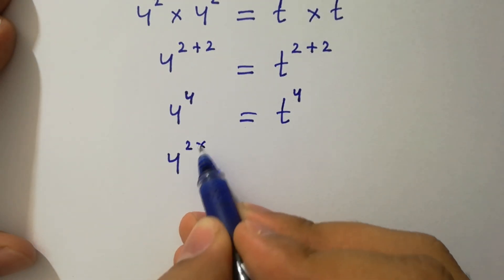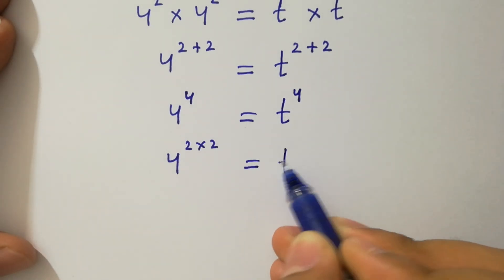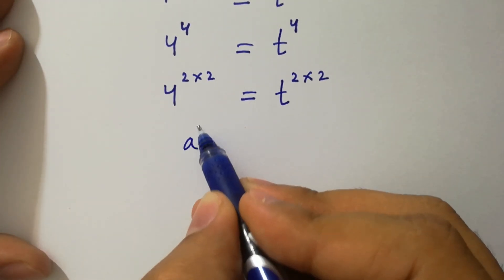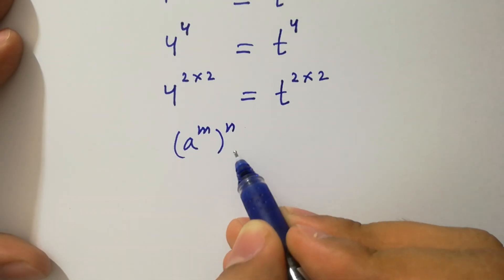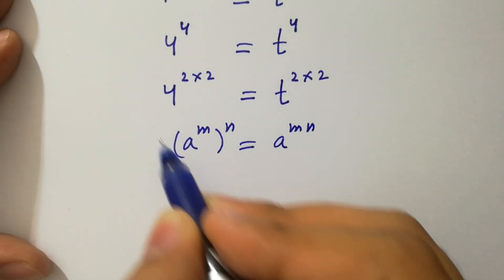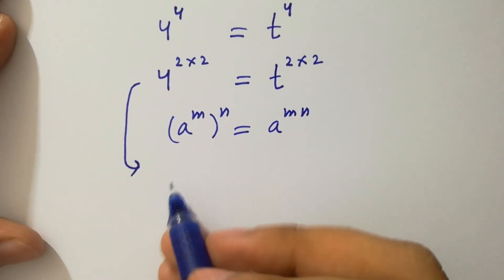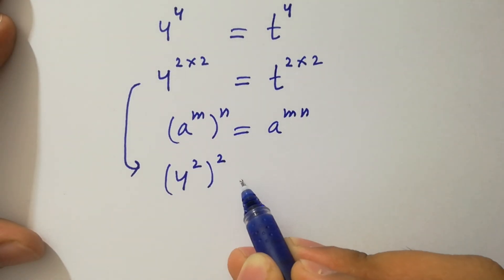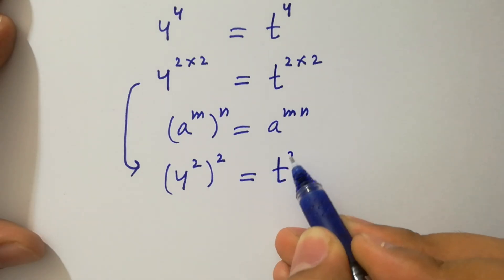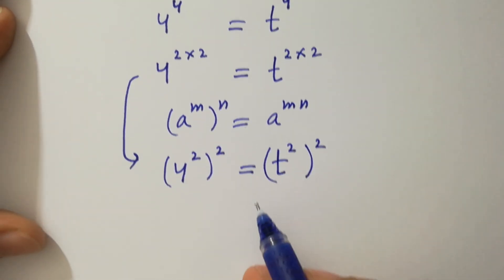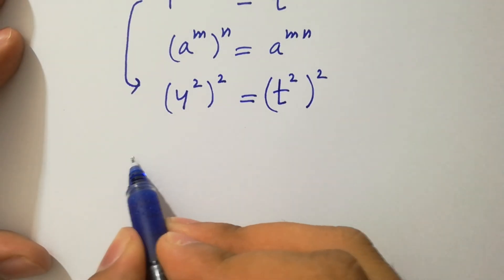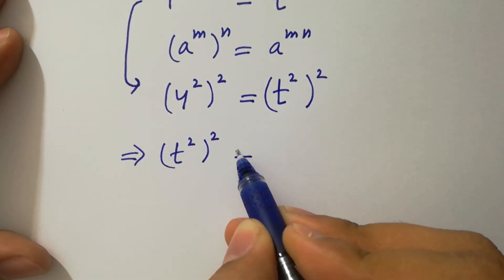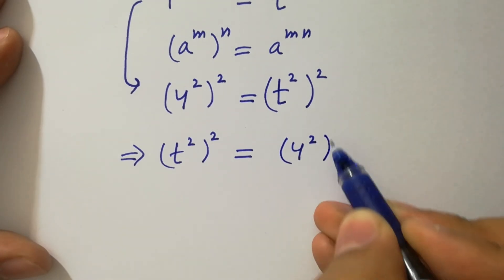Since 4 to the power 4 is 2 times 2, equal to t to the power 4 is 2 times 2, and using the rule a to the power m, to the whole power n, equals a to the power mn, we can write this as 4 squared to the whole power 2 equal to t squared to the whole power 2.